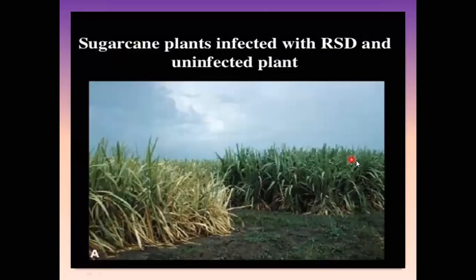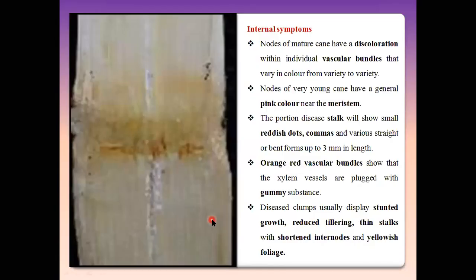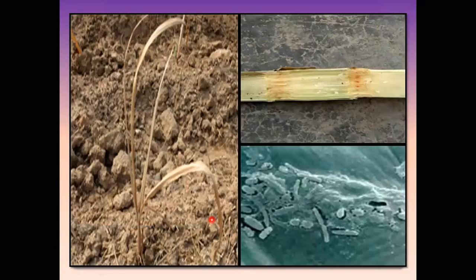This shows a healthy sugarcane plot compared to an infected sugarcane plot killed by the bacteria. The comma-like vascular bundle cells are generally red in color in the infected stalk.